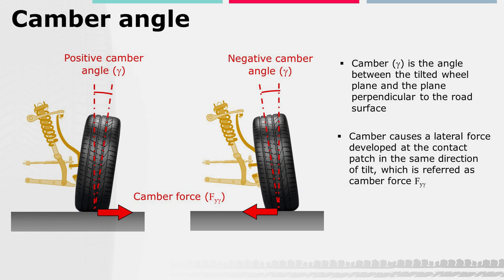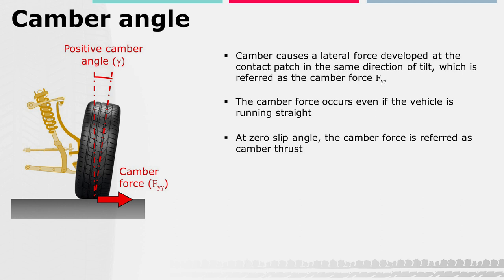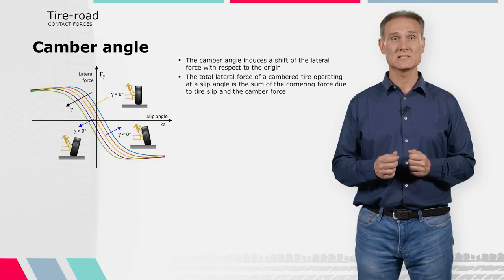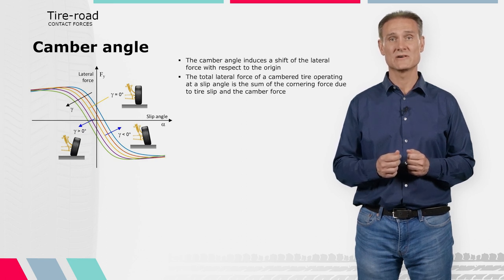A cambered rolling tire produces a lateral force in the direction of the tilt — the camber force Fγ. The camber force occurs even if the vehicle is running straight. When this force occurs at zero slip angle, it is referred to as camber thrust. A lateral force component due to camber also occurs at slip angles other than zero. The camber contribution is larger for small slip angles, before the peak lateral force is reached, then vanishes for large slip angles.